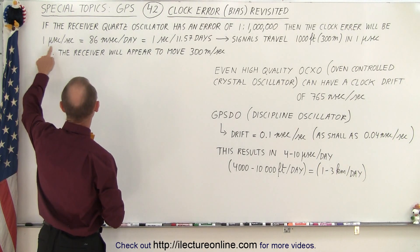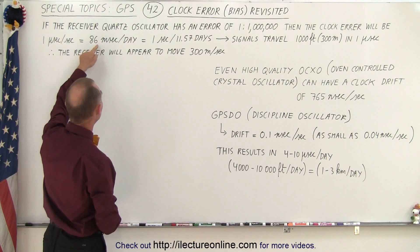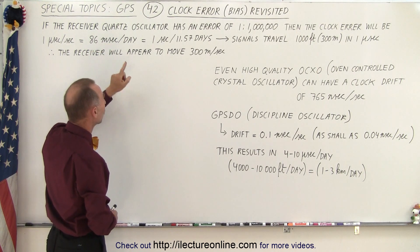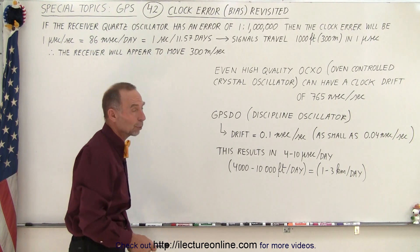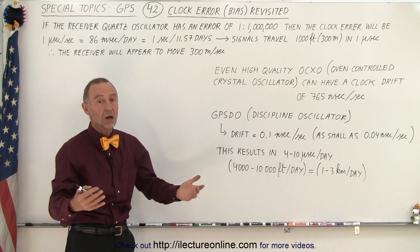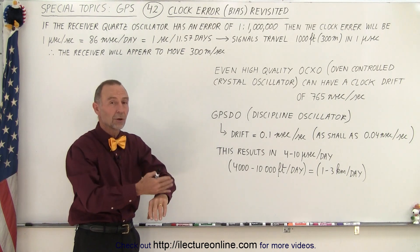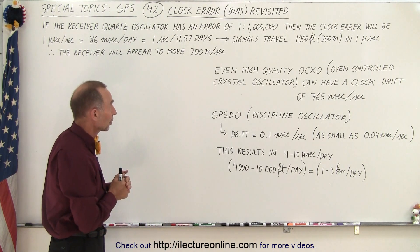So one microsecond per second, that's 86 milliseconds per day, or one second off every 11.57 days. So for most clocks, like the clocks in your car or on your wrist, you think that's pretty good.